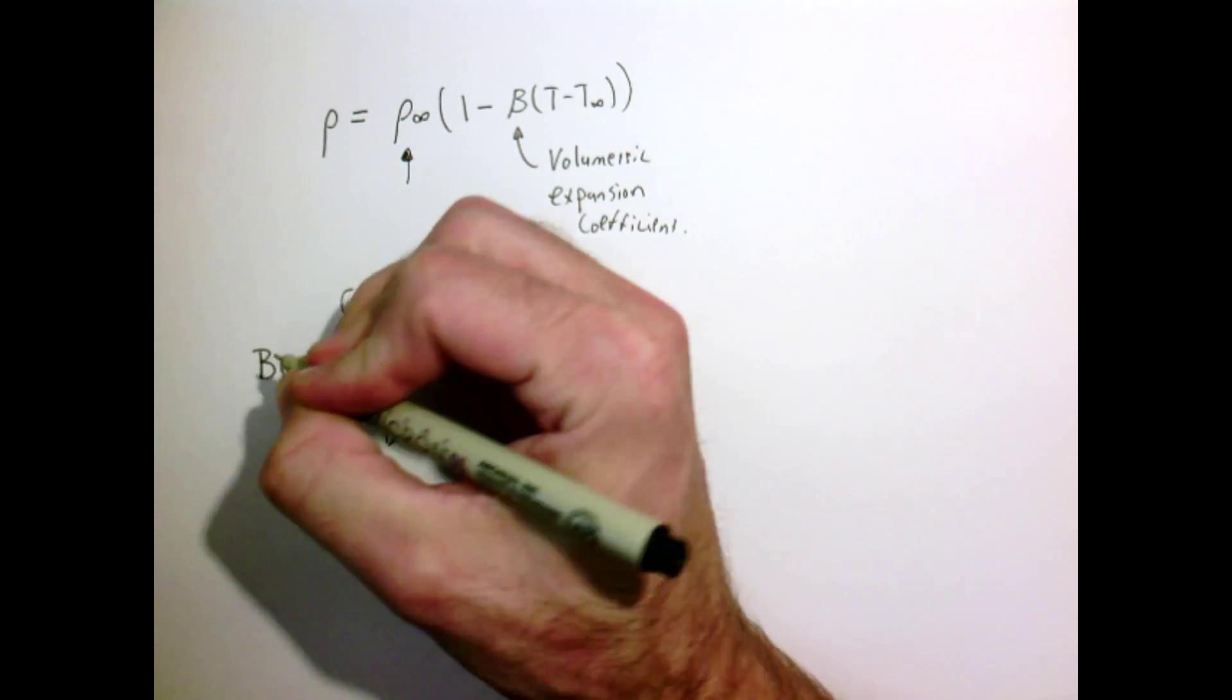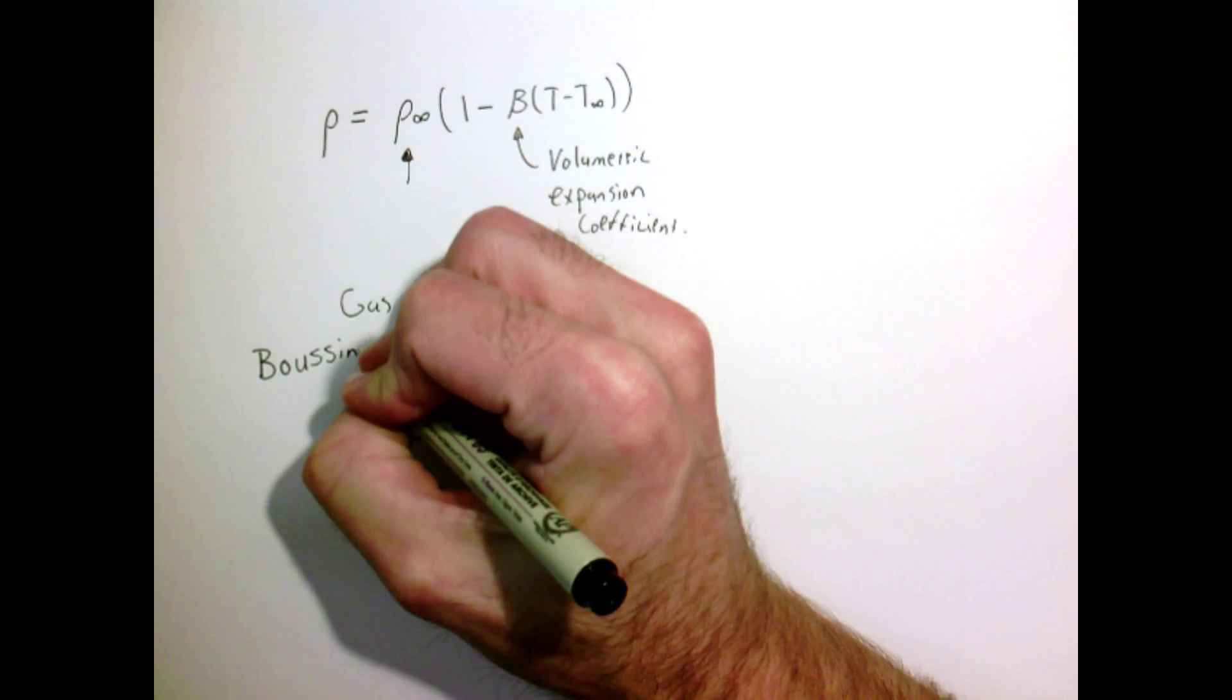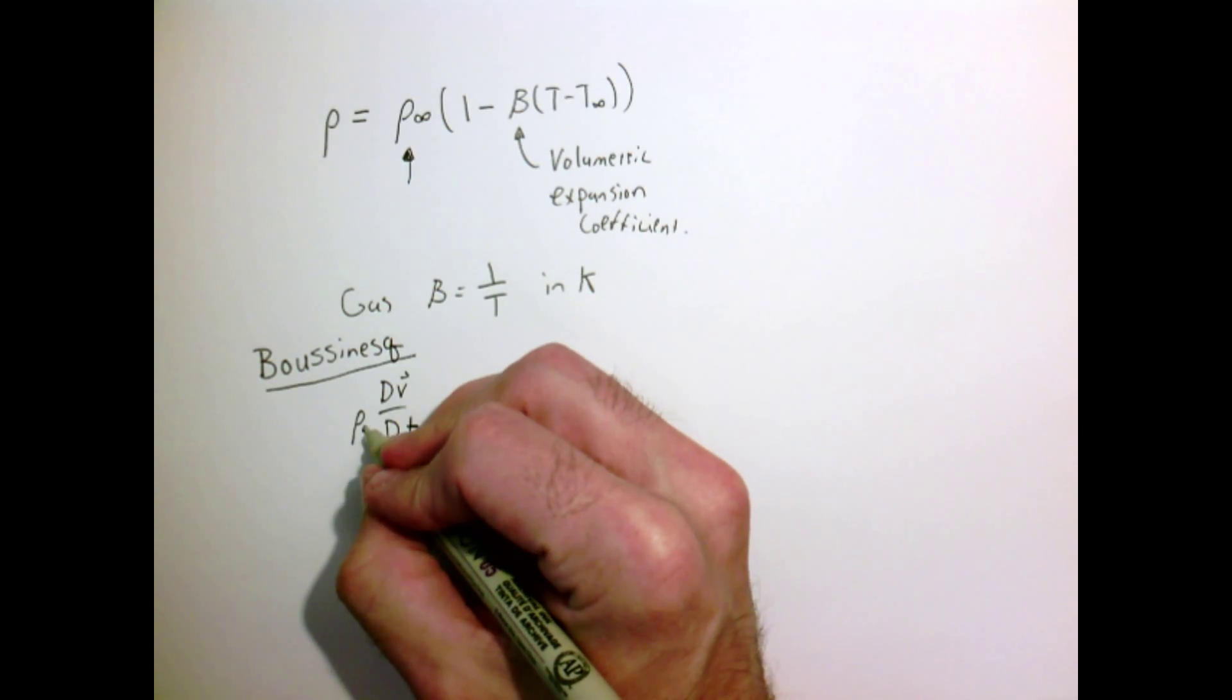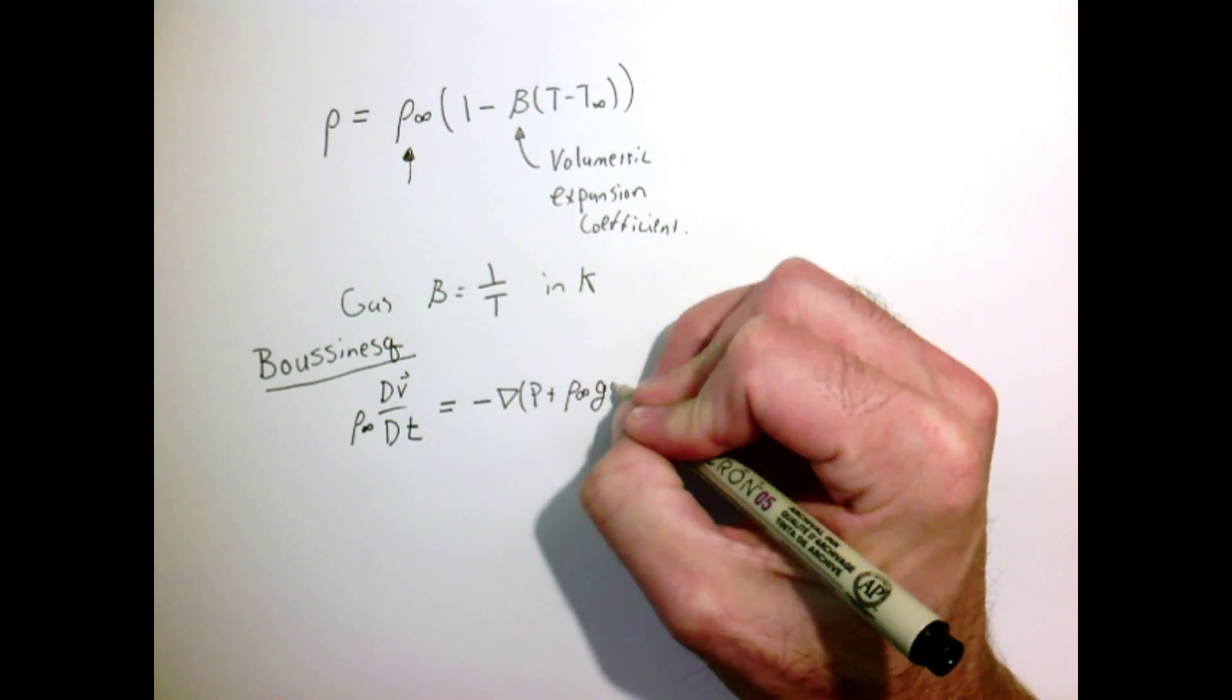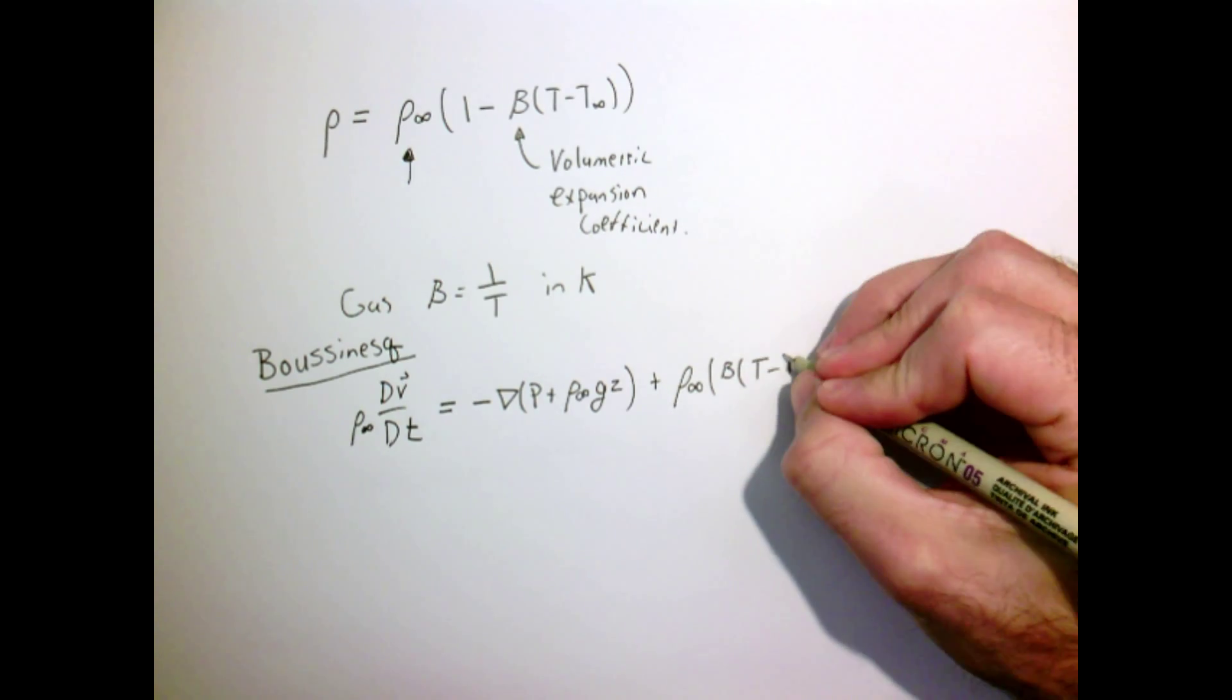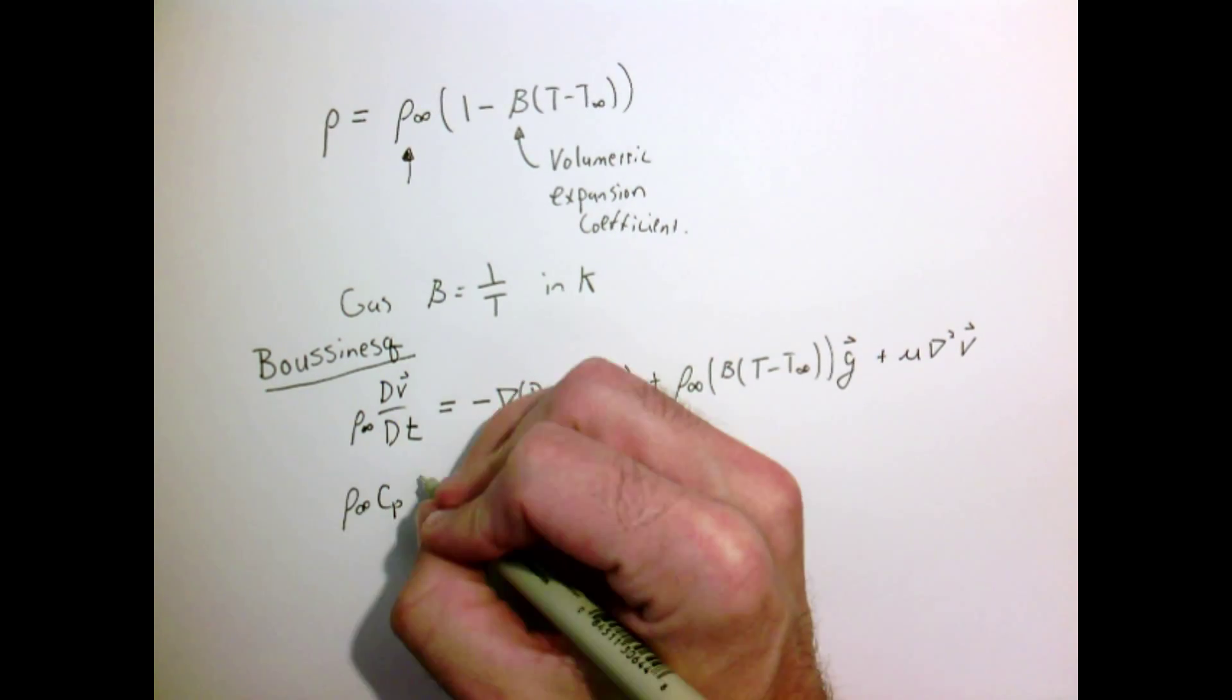A common approximation is the following, called the Boussinesq approximation. This could be derived a little bit more formally than I've done—I'm just simply stating it.